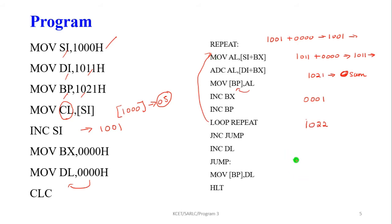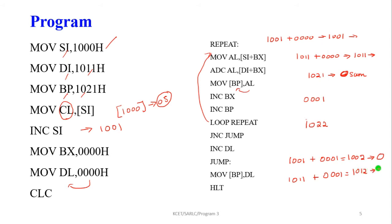On the next loop iteration, the SI value is 0001 and BX has been incremented to 0001. The memory location becomes 0002, which contains some data moved to AL. The DI value is 1011 and BX is 0001, making the location 1012. That value is added to AL, the answer is stored in AL, and then moved to the result memory location. This process repeats until CL becomes zero.